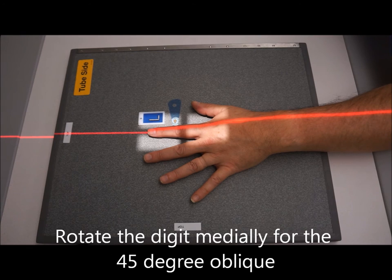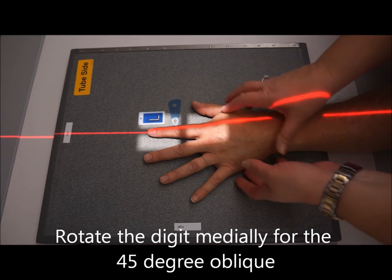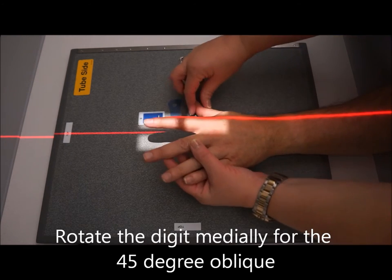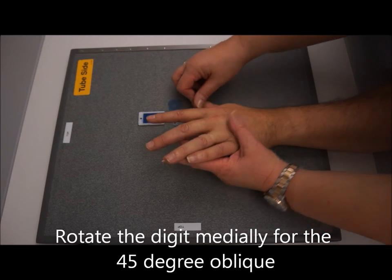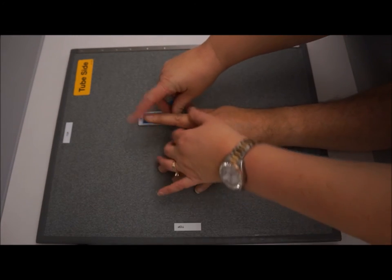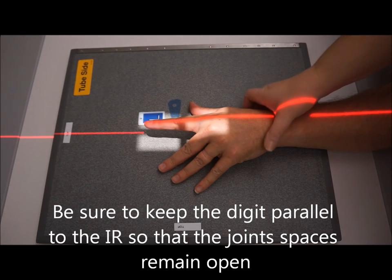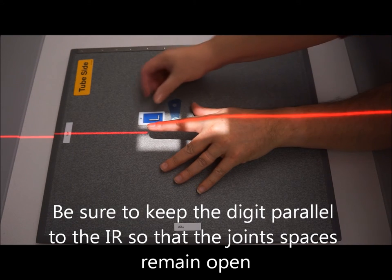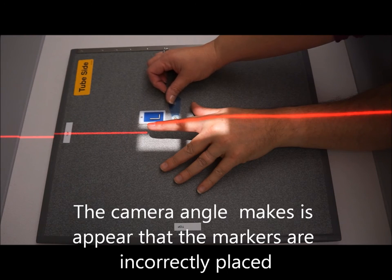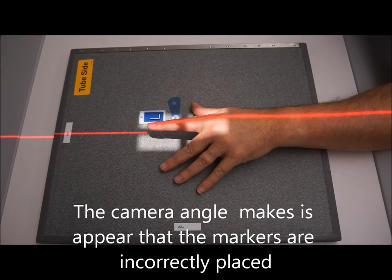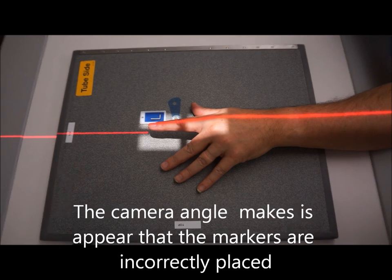From here we're going to do our medial oblique. All we're going to do is have the patient balance on their thumb, digit parallel, and this is a 45 degree oblique. Still want to maintain the accessory marker at the area of interest.